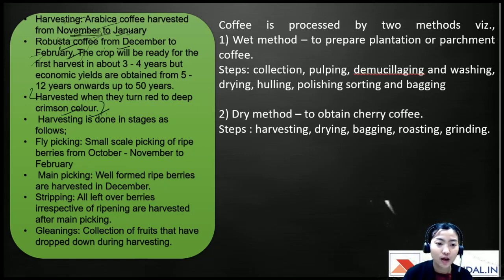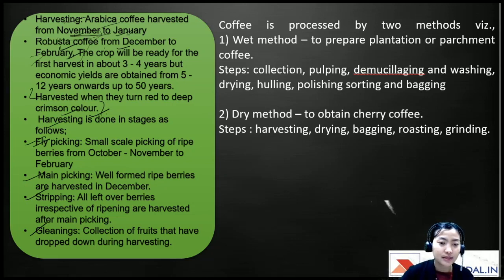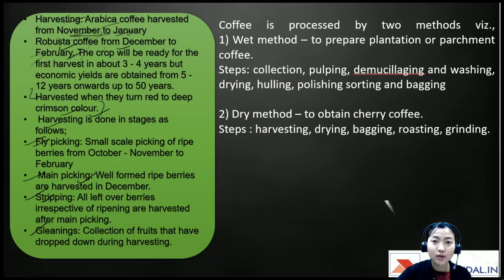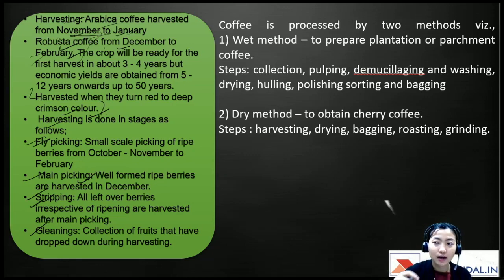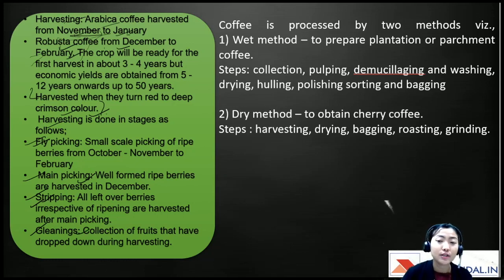Harvesting is done in four stages: fly picking, main picking, stripping, and gleanings. Fly picking is small-scale picking of ripe berries from October to November. Main picking harvests ripe berries in December. Stripping removes leftover overripe berries. Gleanings is the collection of fruits that have dropped to the ground during harvesting.